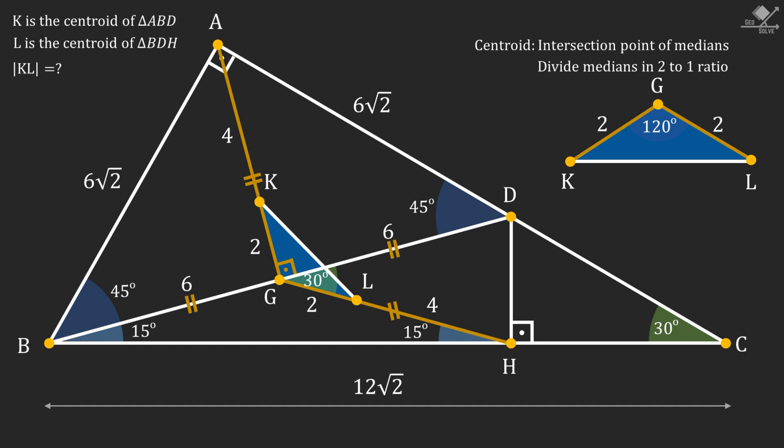At this point, we can use cosine theorem to find the length of the line segment KL as 2 times square root of 3.